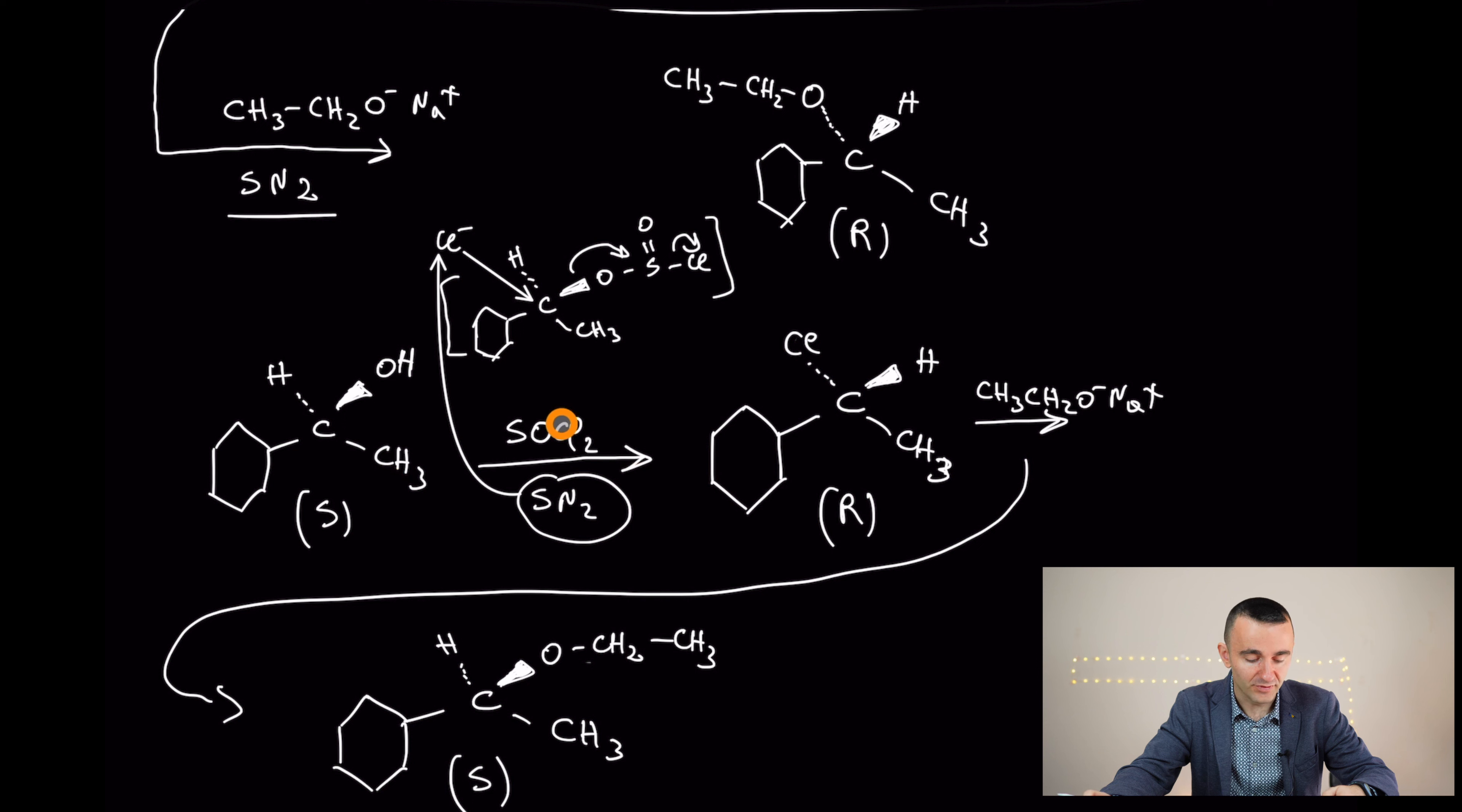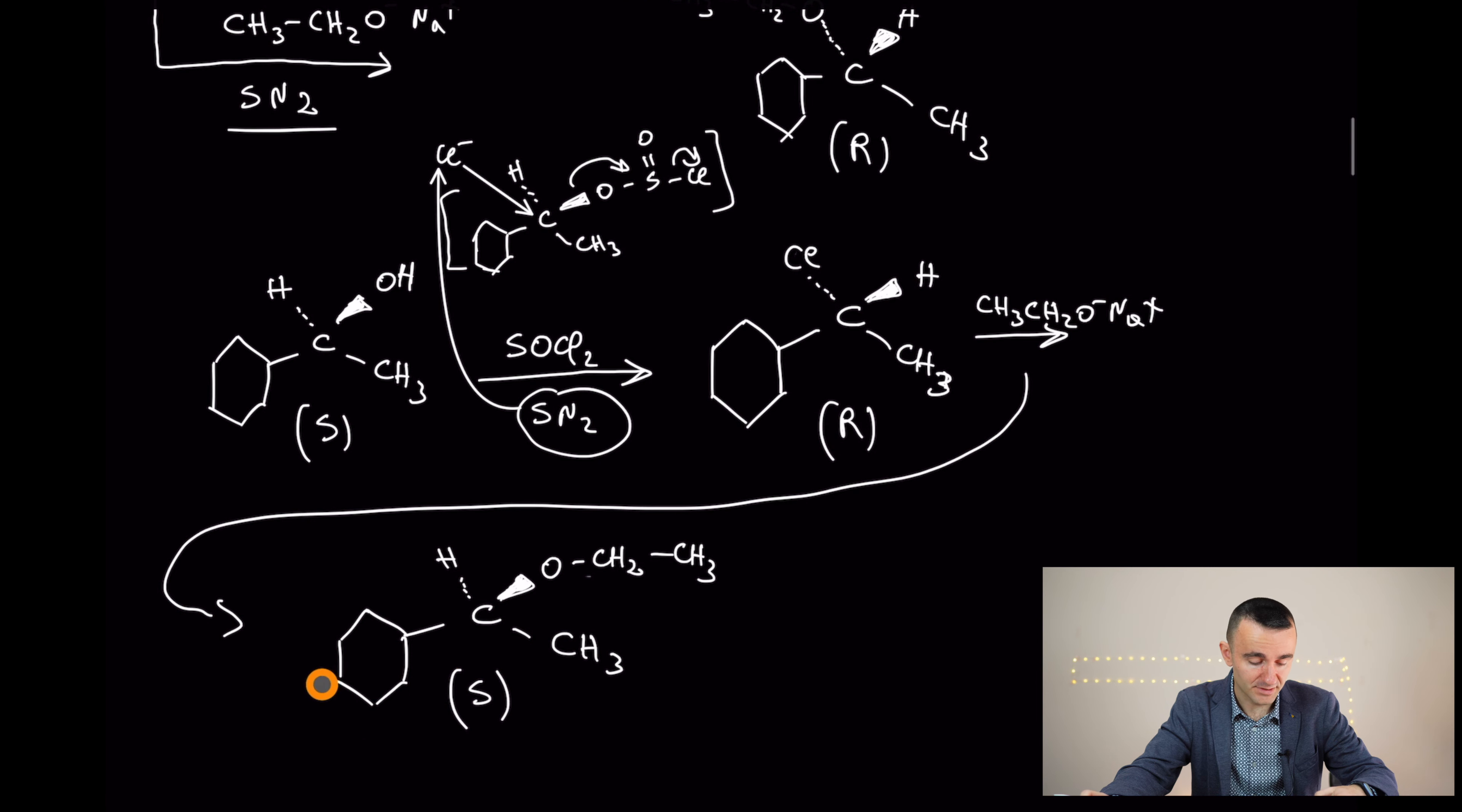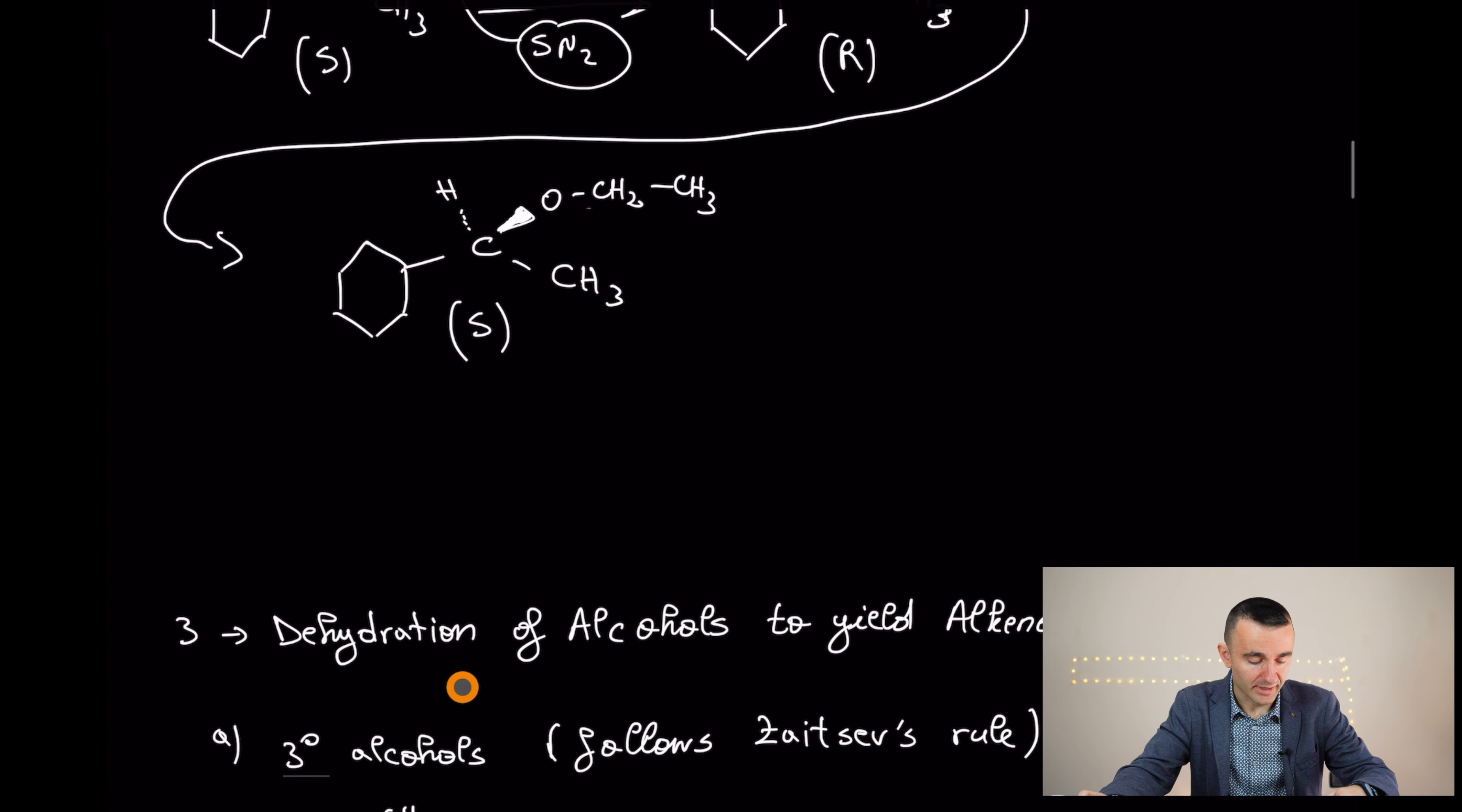So if you start from S, treat it with tin chloride, it's going to invert it because it's going to remove entirely the OH, making that firstly a better leaving group and after that, acting with the chlorine according to SN2 reaction mechanism. And it's going to go S. Okay, let's move further.